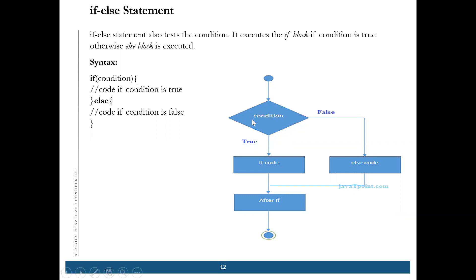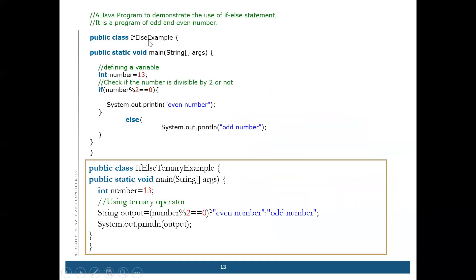For example: suppose a number is 18. If that number divided by 2 has a remainder of zero, then it's an even number; else it's an odd number. This is a program to demonstrate the use of the if-else statement — we are finding whether a number is odd or even. If the number is divisible by 2 it is even, otherwise it is odd.